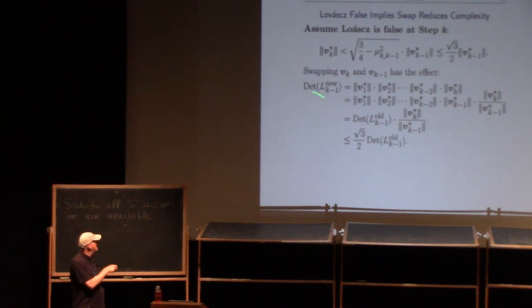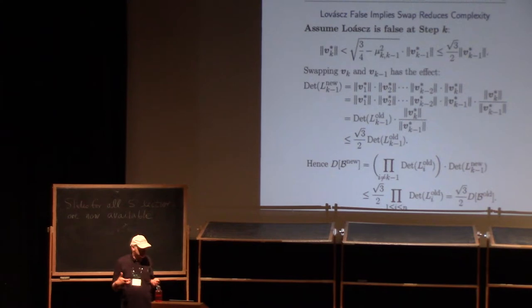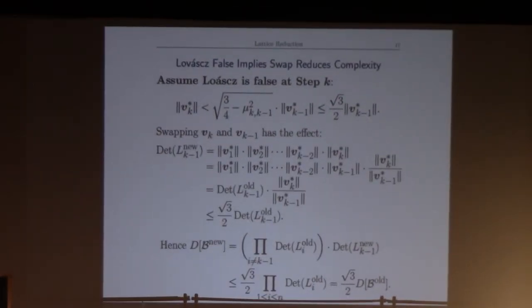So when I do a swap step, the k-first volume, just that one sub-lattice volume, gets reduced by a factor of square root of 3 over 2, and all of the other sub-lattices are the same because I've only swapped two vectors. And so that means that the complexity of the entire new basis is less than or equal to square root of 3 over 2 times the complexity of the old basis.